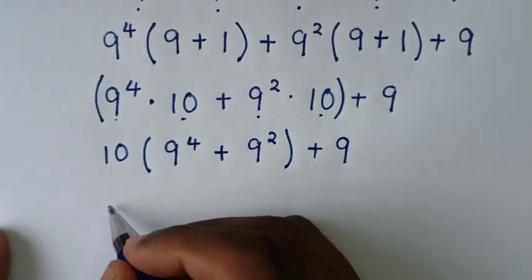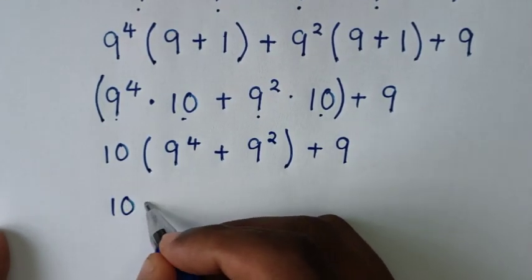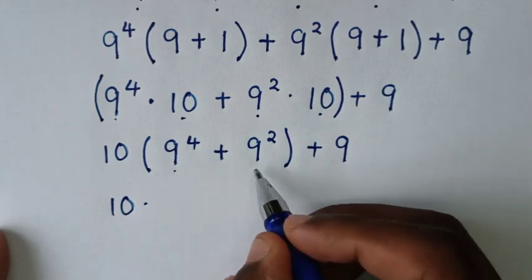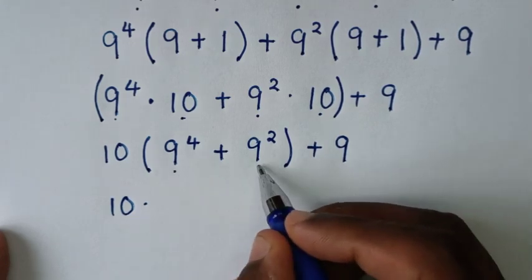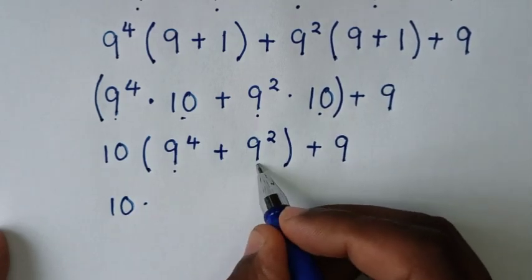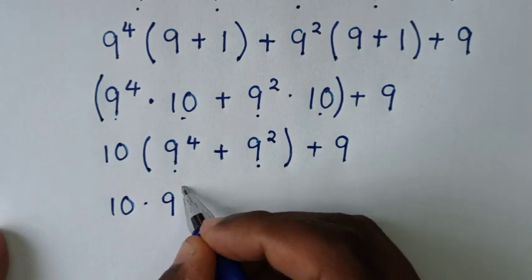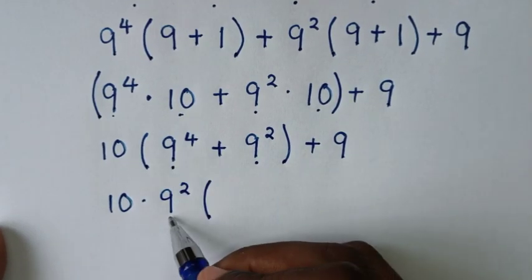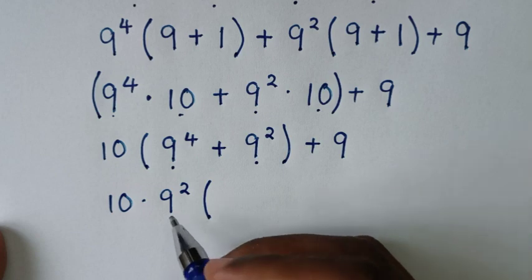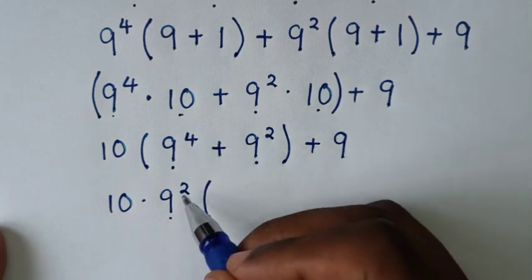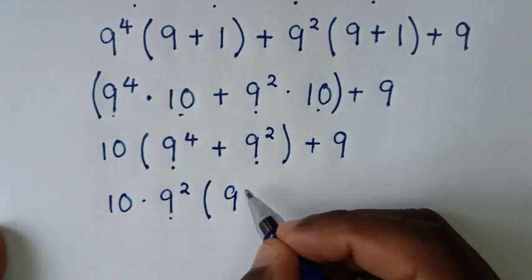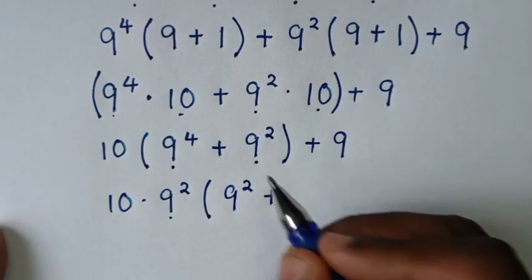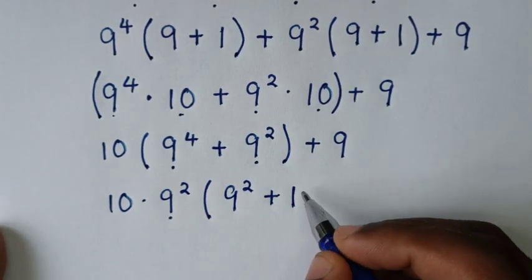Then in the next step, it will be 10 times — from here 9 power 4 plus 9 power 2 — 9 power 2 is common, so we will take 9 power 2 out of the bracket. 9 power 4 divided by 9 power 2: we take power 4 minus power 2, so it will be 9 power 2. Then plus 9 power 2 divided by 9 power 2, which is 1.